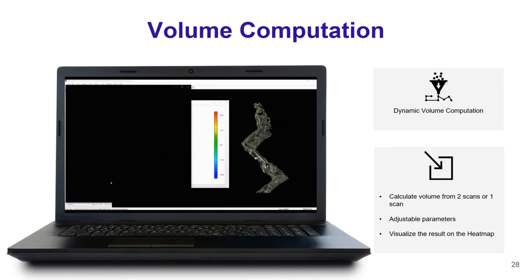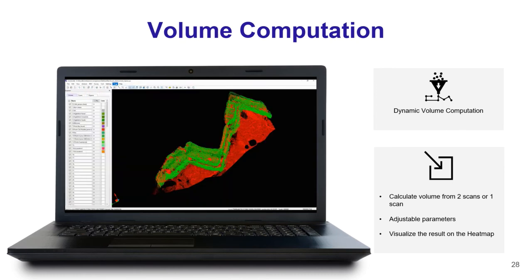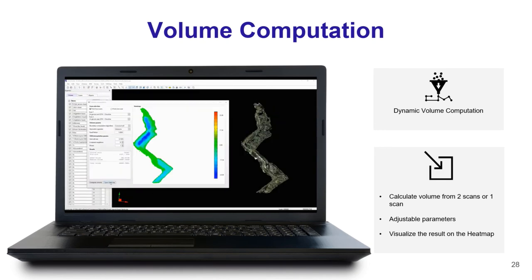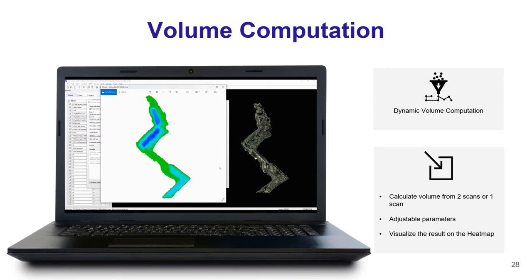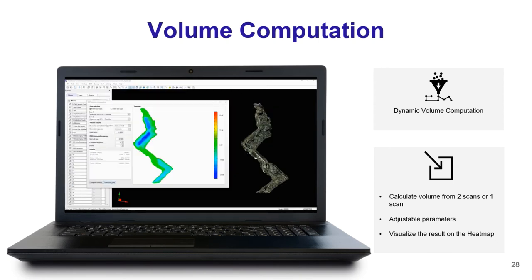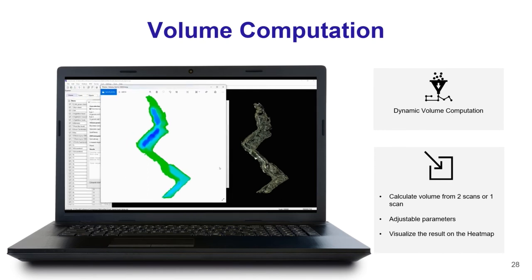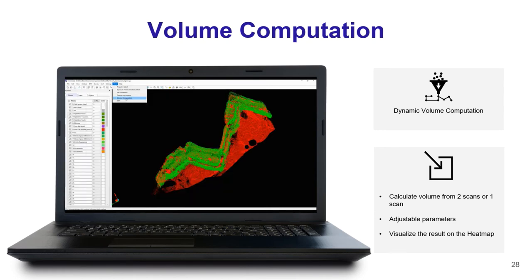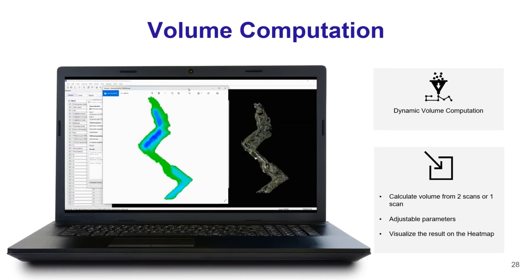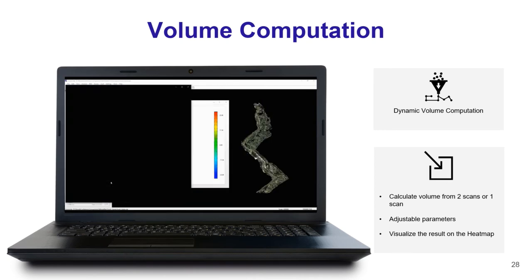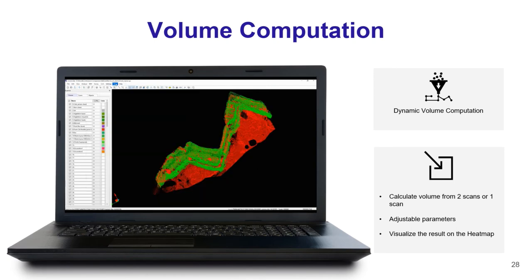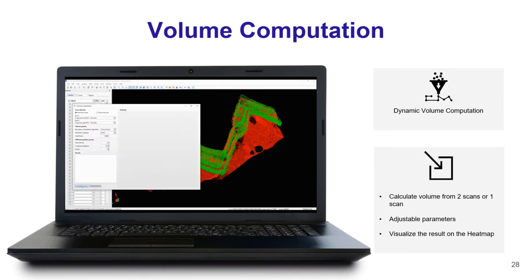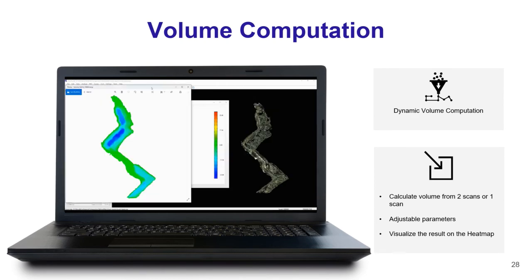Vision LiDAR 2020 introduces a new dynamic volume computation that calculates volume directly from your scan or between two scans in multi-date mode. Instead of creating surfaces, you simply select or delimit the area for a single scan, or select two scans for multi-date computation. Once the calculation is done, you can visualize results on a heat map showing where changes occurred, and publish those results within a report.